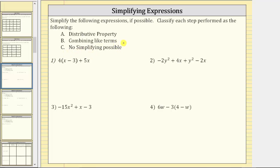For number one, we have four times the quantity x minus three plus five x. The first step is to clear the parentheses by distributing the four. So we classify the first step as A for the distributive property.